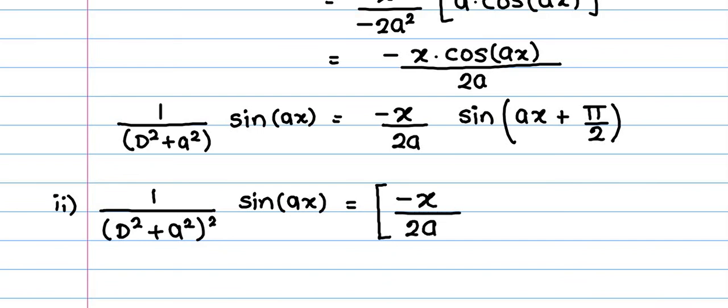Minus x upon 2 A can be taken 2 times and we need to take this as 2 factorial into sin A x plus 2 times pi by 2.